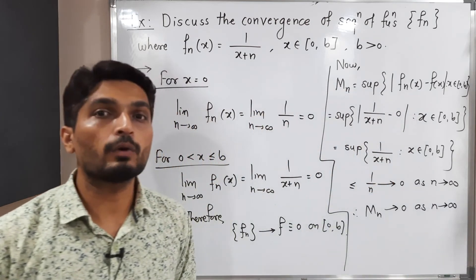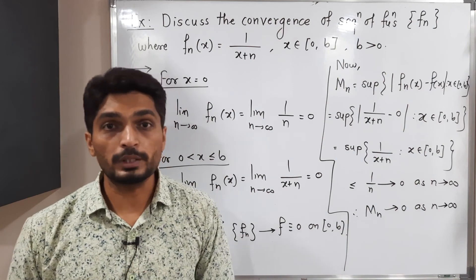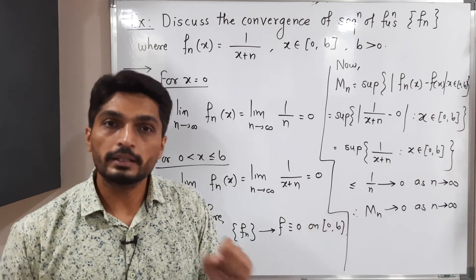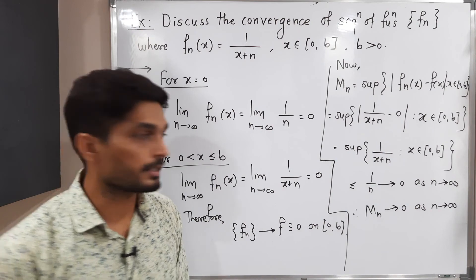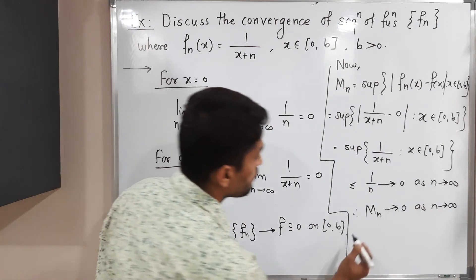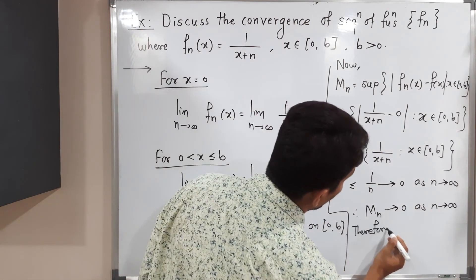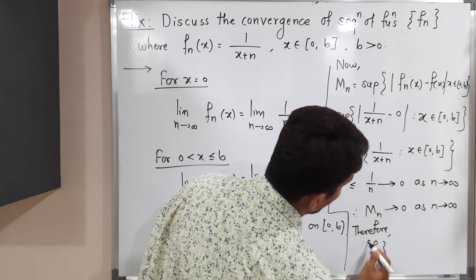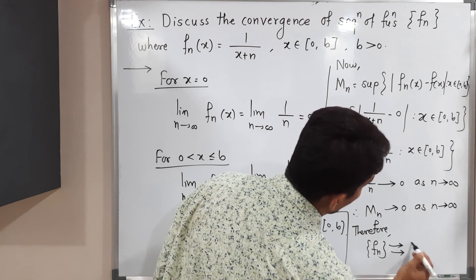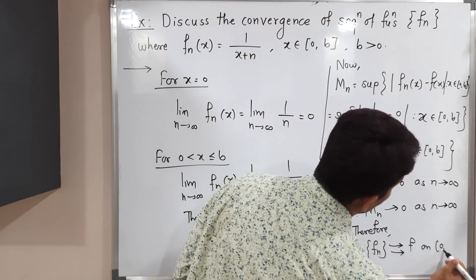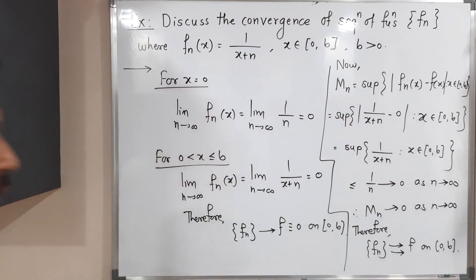This is a very important result. Since in the Mn test, if Mn tends to 0, then the convergence is uniform. And we are getting exactly that. Therefore, fn uniformly converges to f on the closed interval [0, b], so the convergence is uniform.